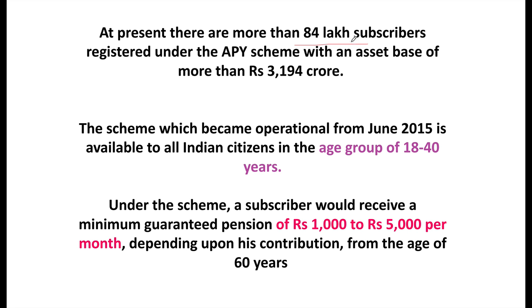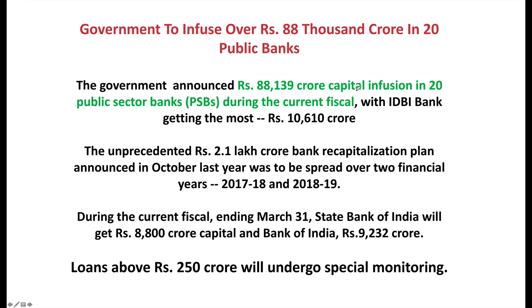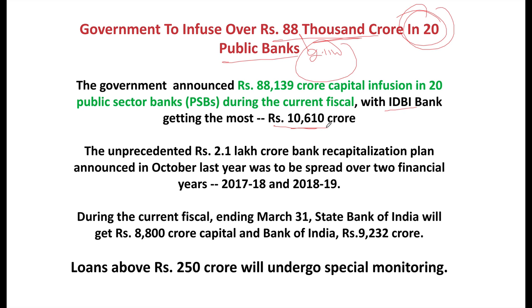At present there are around 84 lakh subscribers of Atal Pension Yojana and total assets are around 3,194 crore rupees. You can get a pension of 1,000 to 5,000 rupees per month depending on which plan you adopt once you turn 60. The government has decided to infuse 88,000 crore into 20 public banks out of the total 2.11 lakh crore package. IDBI Bank will receive the most — 10,610 crore — while SBI will receive 8,800 crore and Bank of India 9,232 crore.